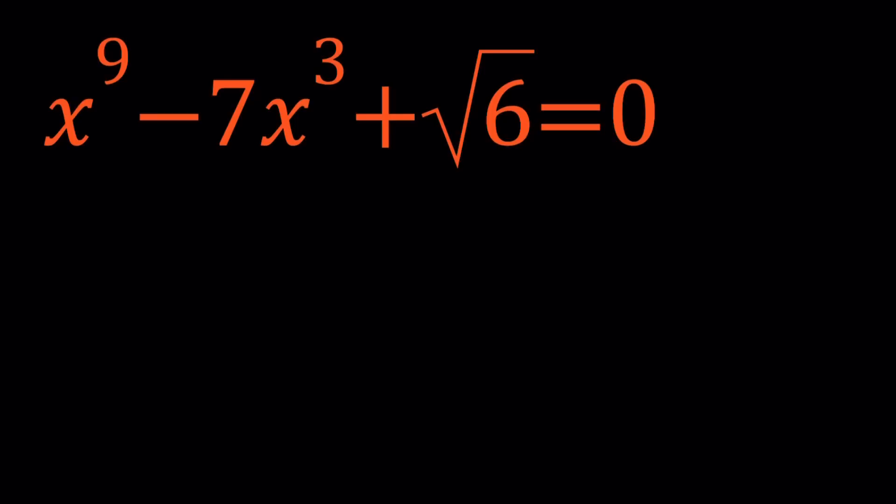Anyways, in general I mean. But this equation can be simplified a great deal because this is kind of like a bi-quadratic, kind of like a tri-cubic maybe. Anyways, we can set x cubed equal to y. And this becomes y cubed minus 7y plus square root of 6 equals 0. That greatly simplifies the problem, at least we end up with a cubic.